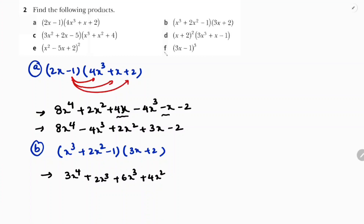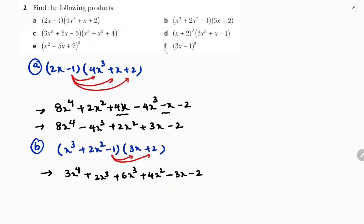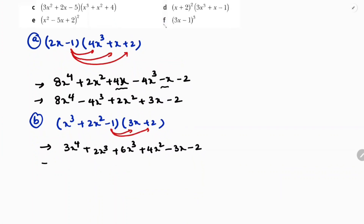Then the last term: take minus 1 and multiply for both. Minus 1 into 3x is minus 3x, minus 1 into 2 is minus 2. Simplifying like terms: 2x³ plus 6x³ is 8x³, plus 4x² as a single term, minus 3x and minus 2.